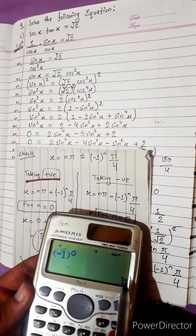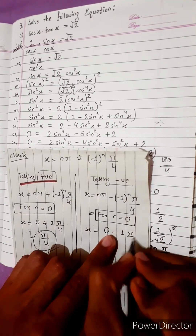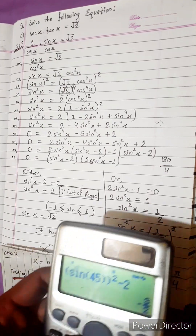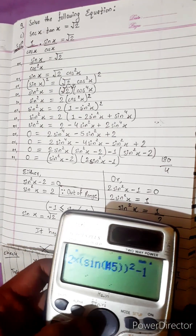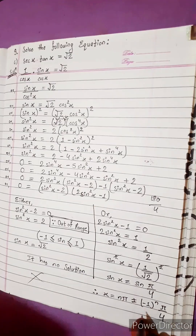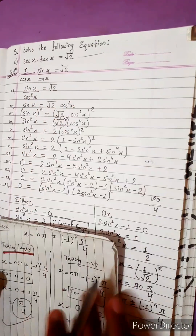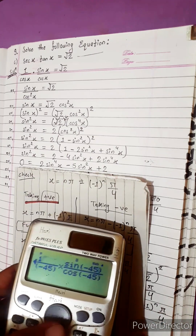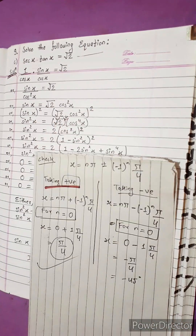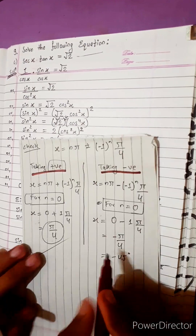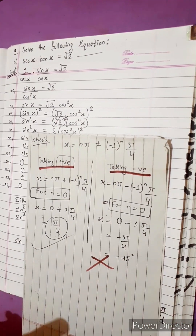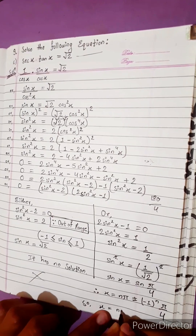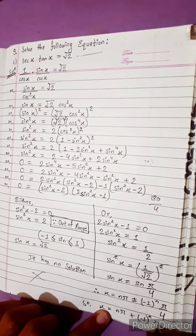Taking negative, for n equals zero: minus one power zero is again one, so x equals minus pi by 4, which is minus 45 degrees. Putting minus 45 degrees in the equation, we do not get a valid value. So negative is rejected. Therefore x equals n pi plus minus one to the power n times pi by 4, taking only the plus sign.